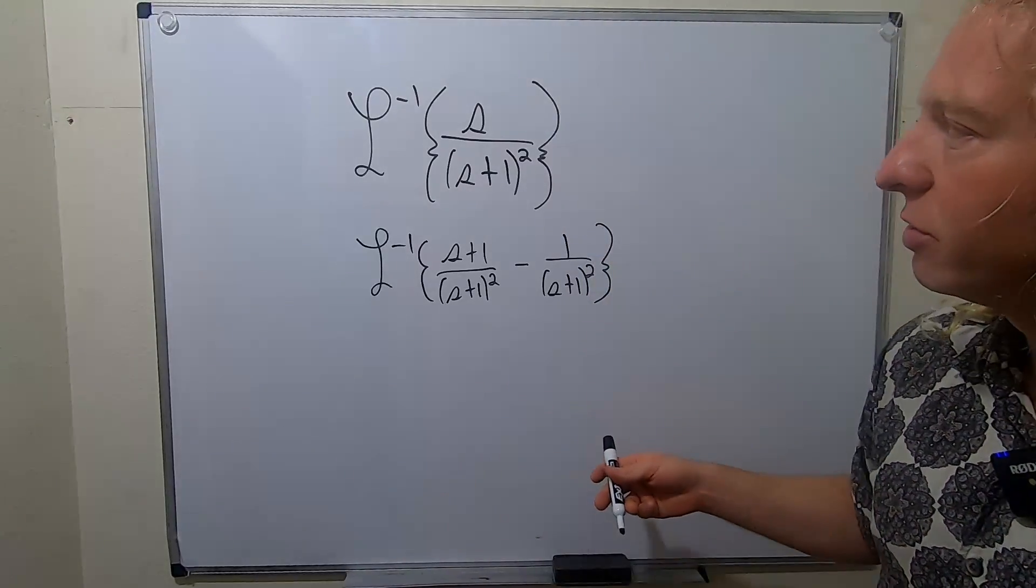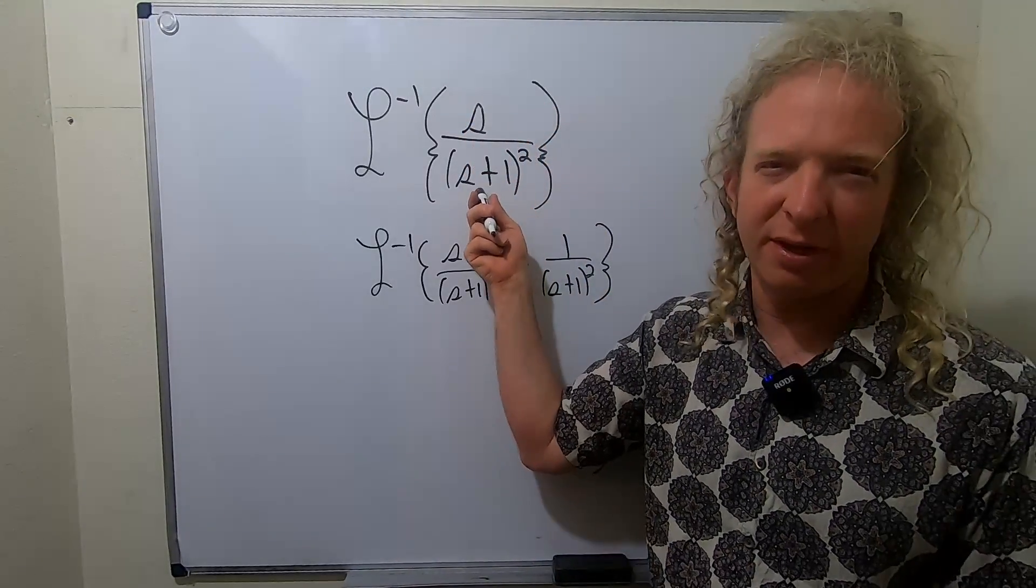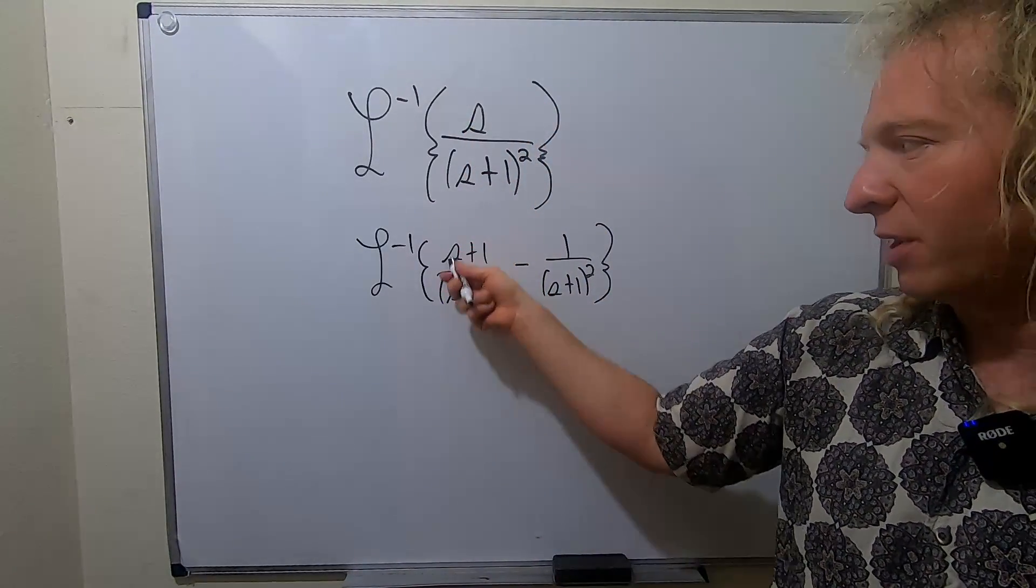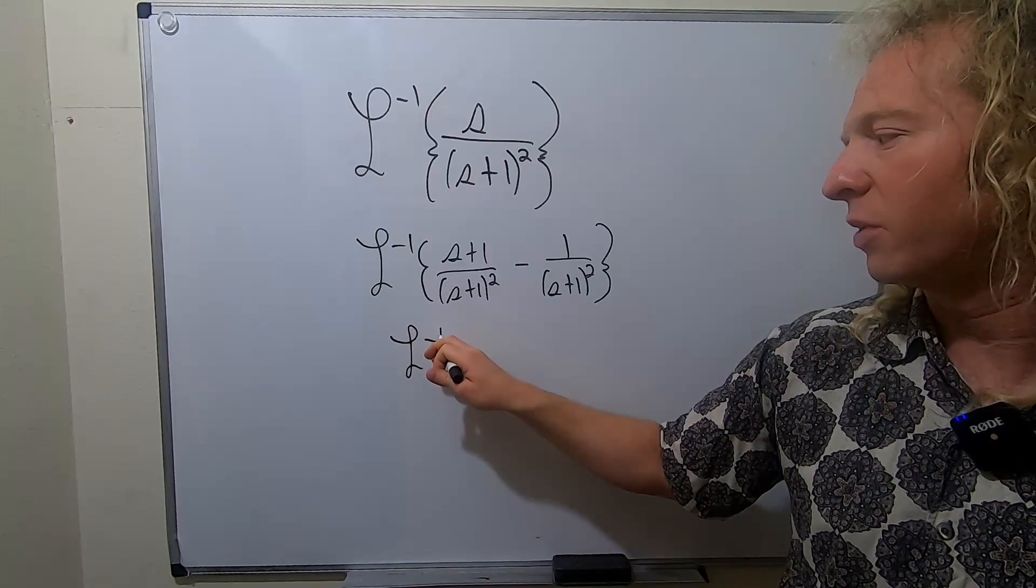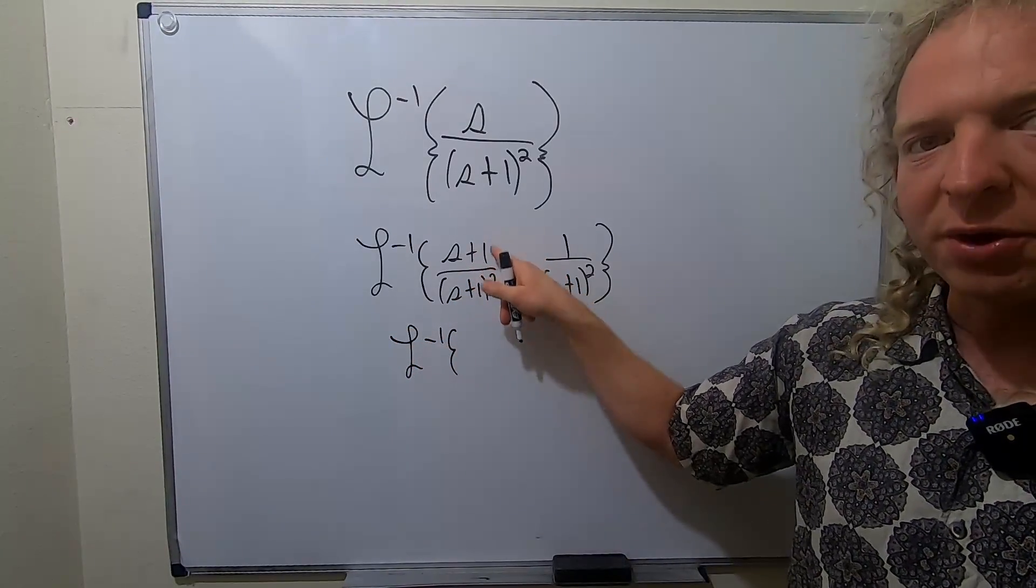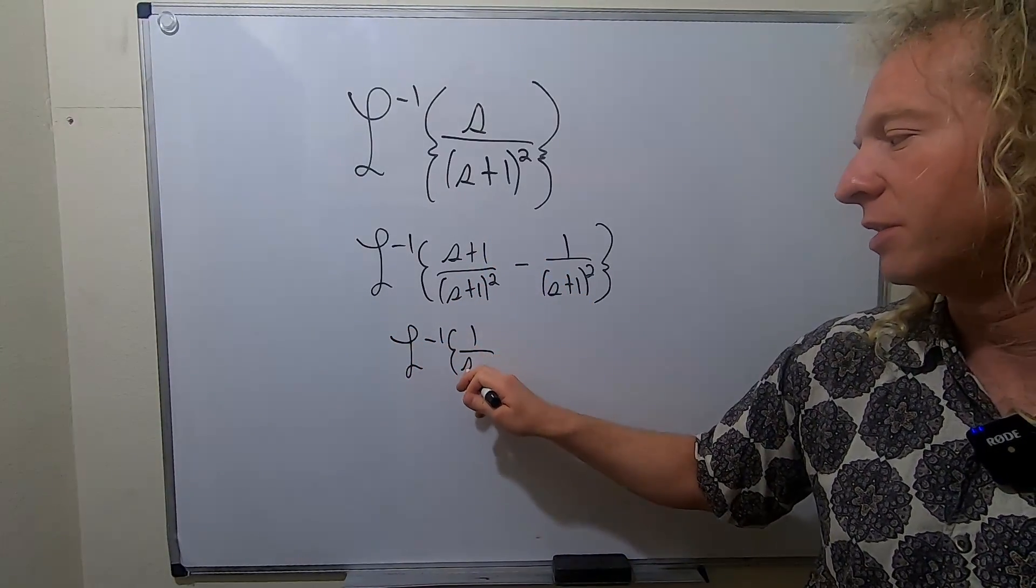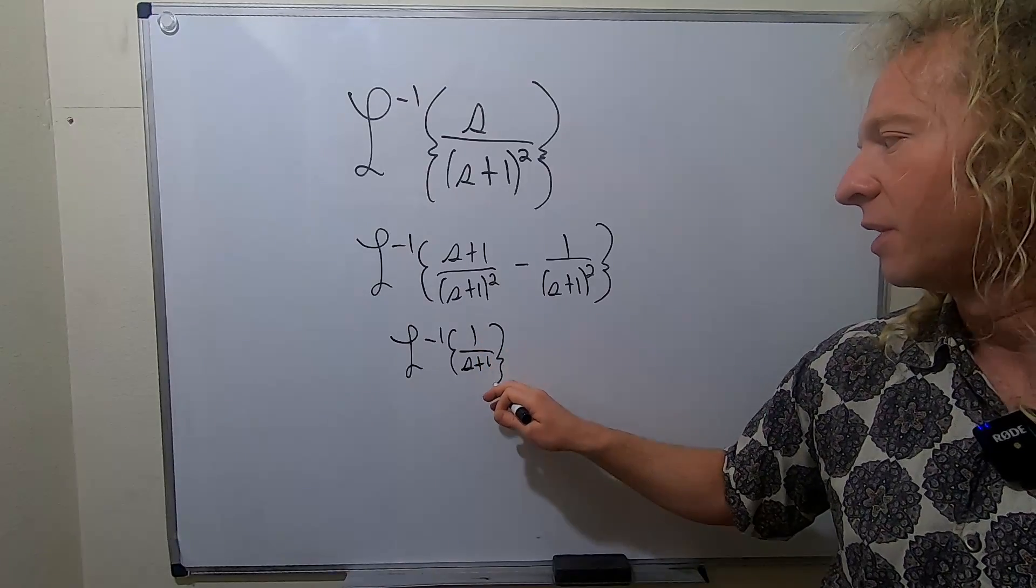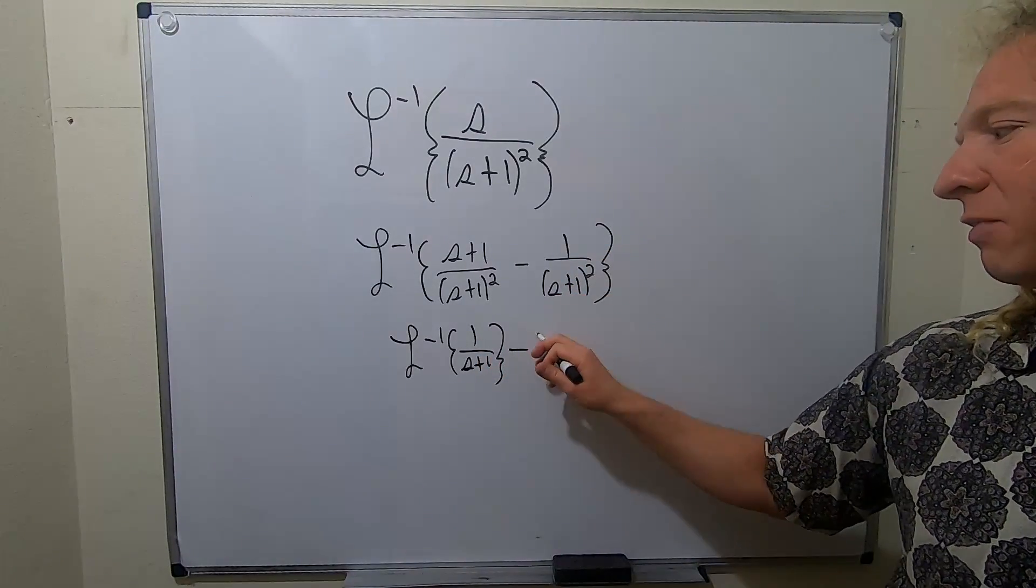And you say why would you do this? Well, we can't find the inverse Laplace of this, but we can find the inverse Laplace of this because this is going to cancel and give us 1/(s+1). We can easily do that with one of the formulas, and then likewise we can take the inverse Laplace of this.